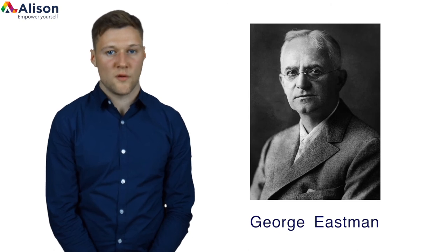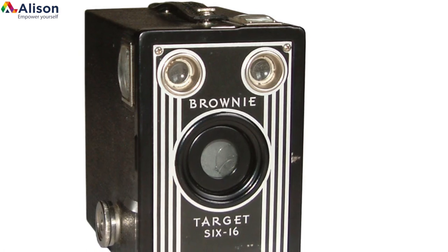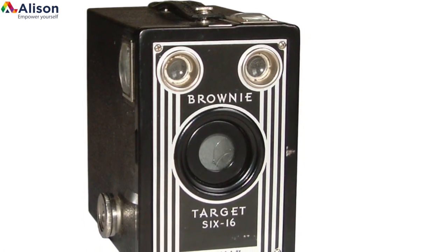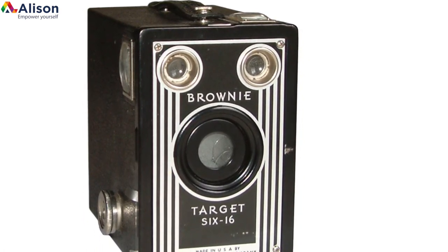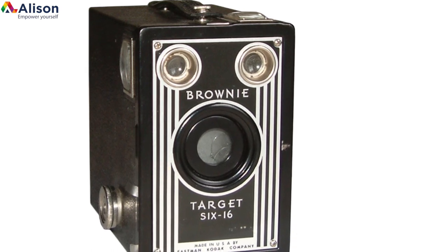Eastman honed in on mass photography in the early 1900s with the development of the Brownie. This made waves because it was a mainstream, affordable camera that introduced the concept of the snapshot.